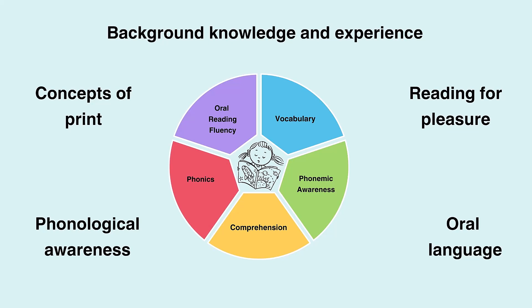For example, educators supporting children who have both decoding and fluency difficulties may prioritise decoding skills initially, as this will ultimately impact on reading fluency once a child's decoding skills are further developed.